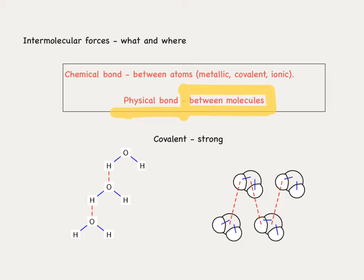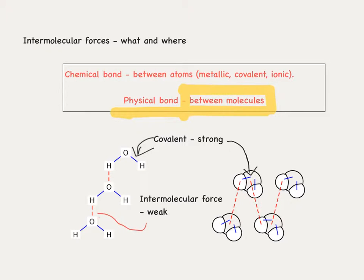Here we have an example of water, H₂O, and we can see two different types of bonds. The first is a covalent bond — that's a strong bond shown here as blue lines in the atoms and in the space-fill model. Those bonds occur between the atoms. The intermolecular force, on the other hand, is displayed between the molecules and is described in red as a dashed line between the oxygen and hydrogens, describing a weak interaction. There is no exchange or sharing of electrons in this bond.